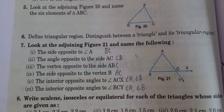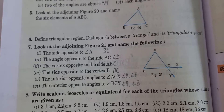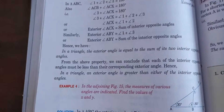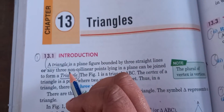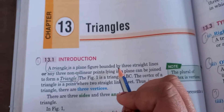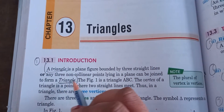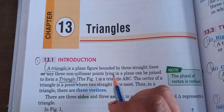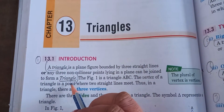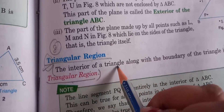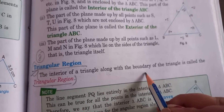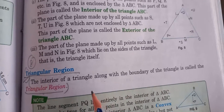6th question: Define triangular region and distinguish between a triangle and its triangular region. So, on page number 152 — a triangle is a plane figure bounded by 3 straight lines, and any 3 non-collinear points lying in a plane can be joined to form a triangle. The interior of a triangle along with the boundary of the triangle is called the triangular region.